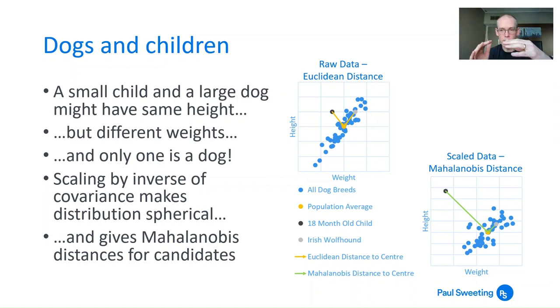You can see that what that does is it pulls the data for the Irish wolfhound closer to the center of that distribution, and it stretches the data for the child way out. It makes it very clear that an Irish wolfhound is a dog and an 18-month-old child is not a dog. So this is why Mahalanobis distance is a much more useful approach, I believe, when you're looking at KNN, rather than using the Euclidean distance. Because one thing you're certain of when you're doing KNN in terms of credit modeling is a lot of the stuff that you're looking at is going to be pretty highly correlated, so it is quite important to take that into account.